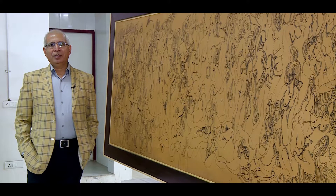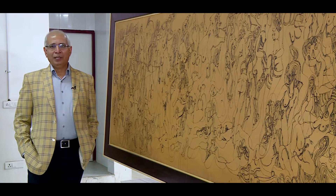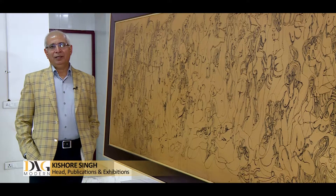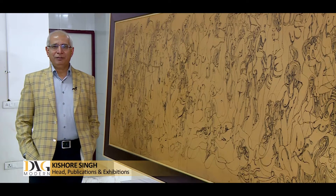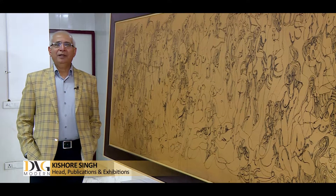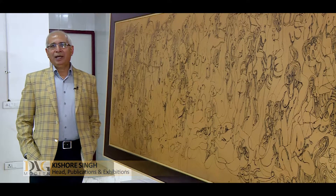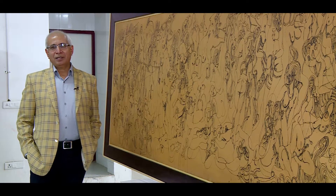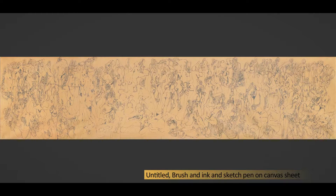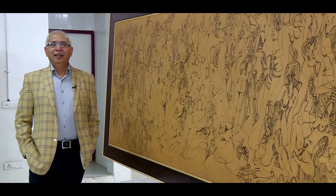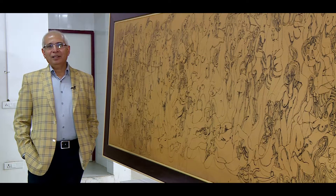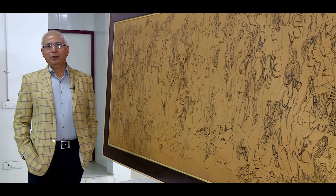When Avinash Chandra left New Delhi for London in the mid-1950s, he was a celebrated landscape artist awarded by the Lalitkala Academy, collected by the National Gallery of Modern Art. In London, his work started to change.